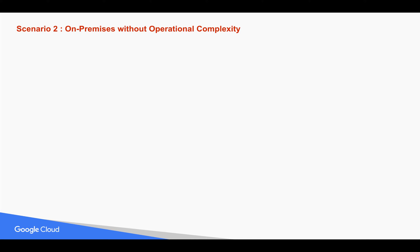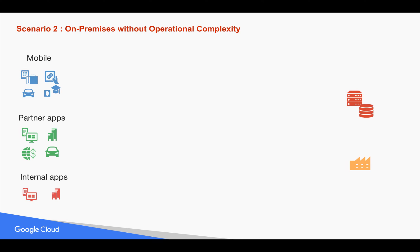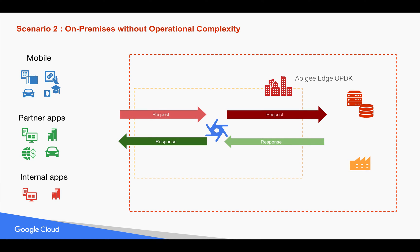The second scenario is on-premises without operational complexity. The solution to the compliance problem is that Apigee Edge is offered as an on-premise solution where you can take the entire Apigee stack and put it inside your firewalls within your enterprise. But the problem with this approach is you don't want the overhead of maintaining the infrastructure and SLAs for all the components of Apigee Edge. The concern is only with the runtime component where the request and response is flowing through, but you don't want to manage the maintenance, scaling, and operation of the entire Apigee stack.